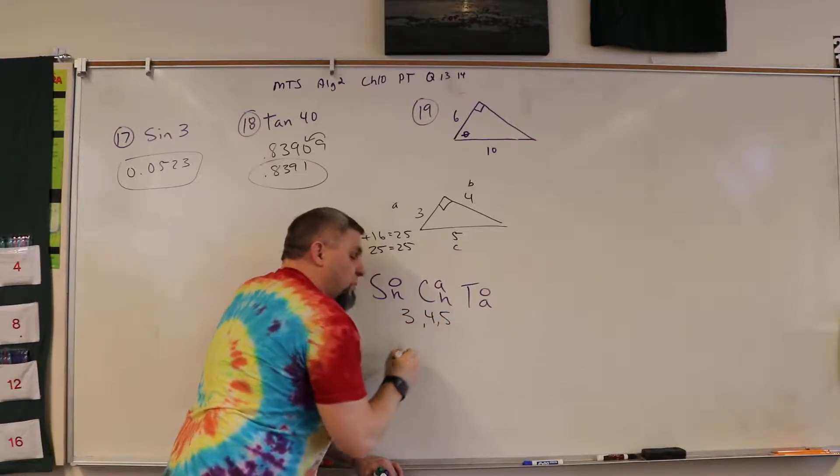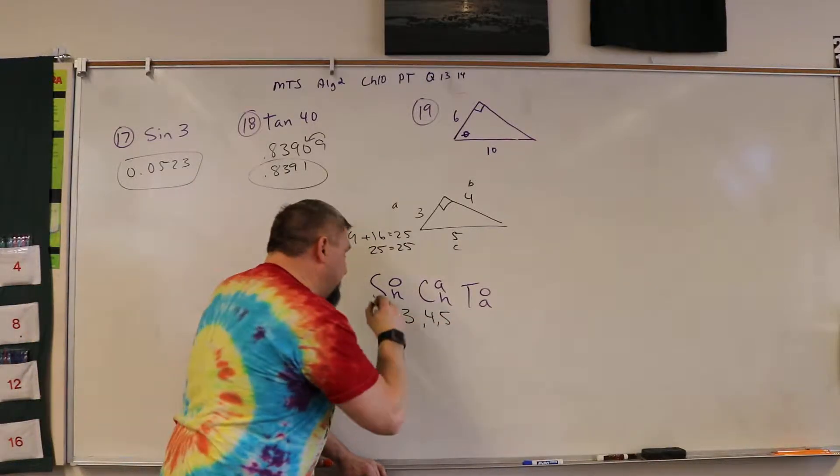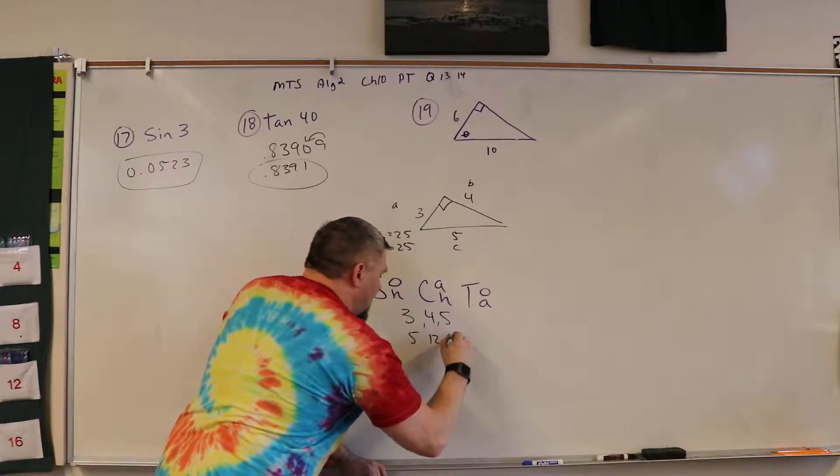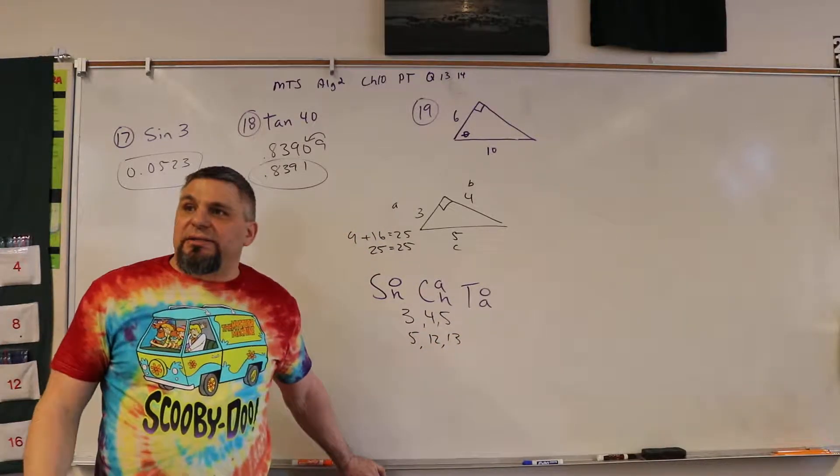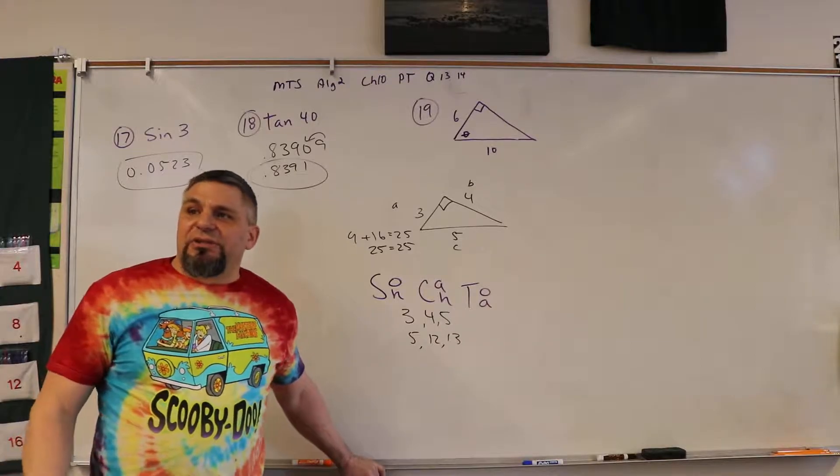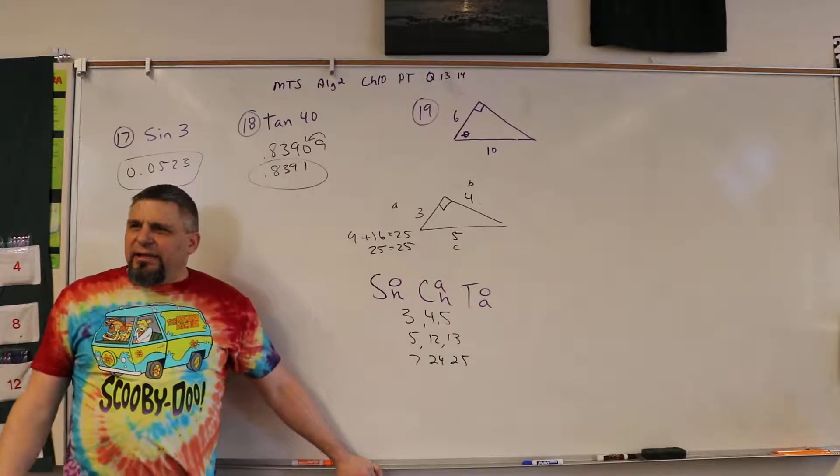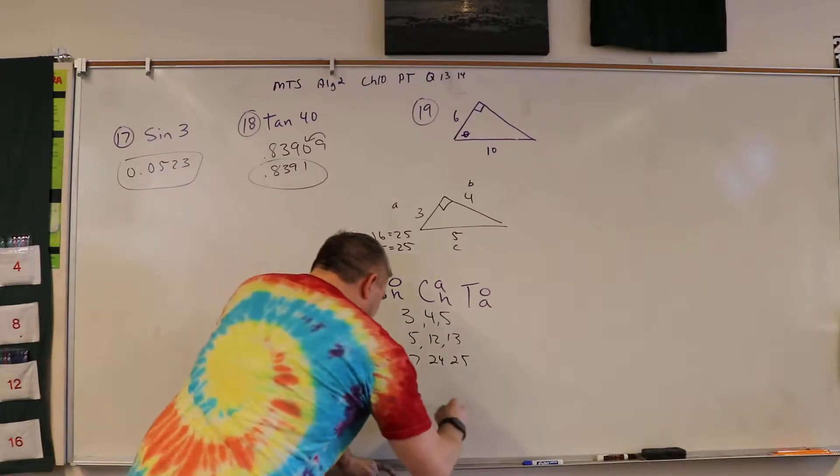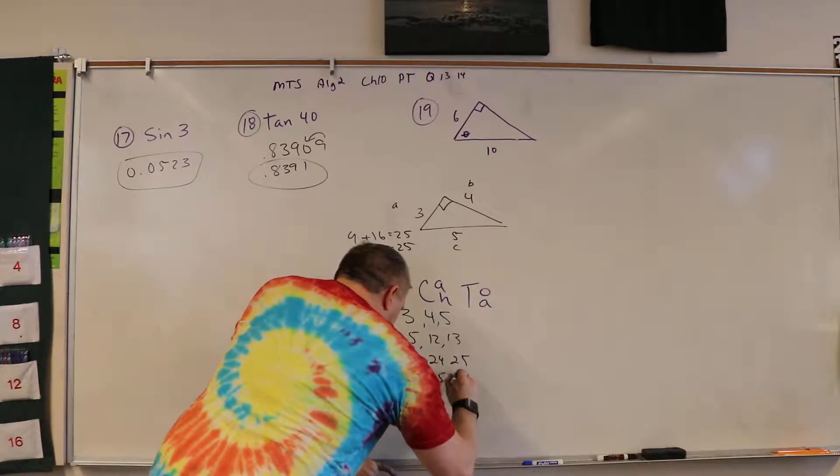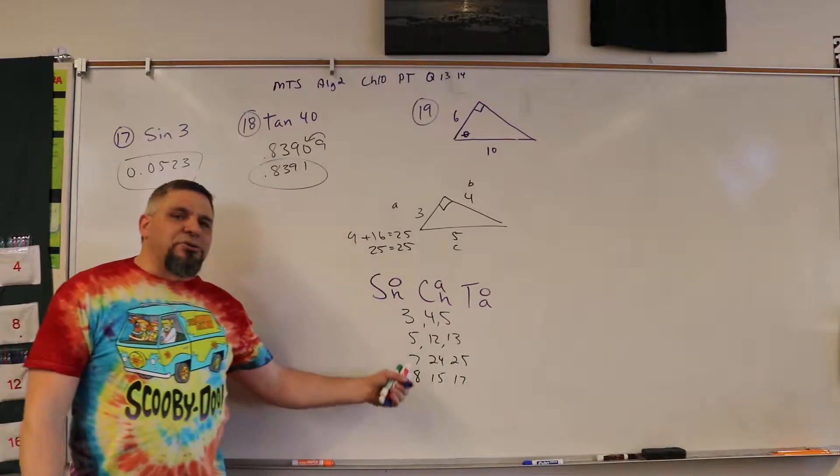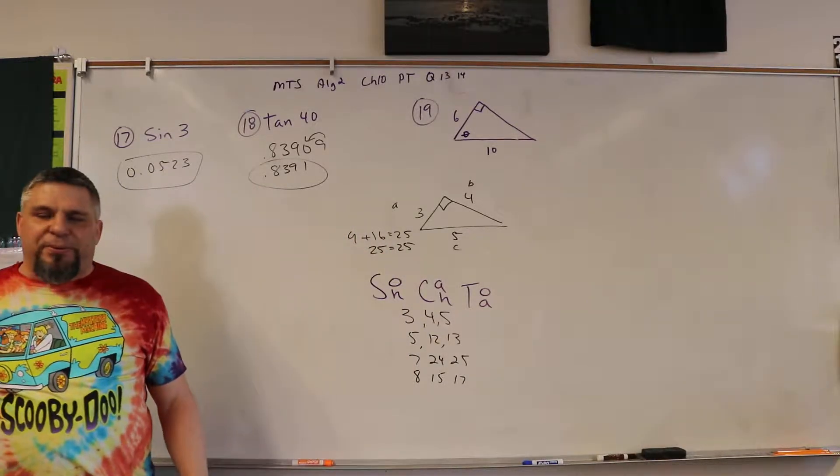3, 4, 5. You're supposed to write down 5, 12, 13. You're supposed to write down 7, 24, 25. And I think the other one is 8, 15, 17. These are the most commonly used Pythagorean triples.